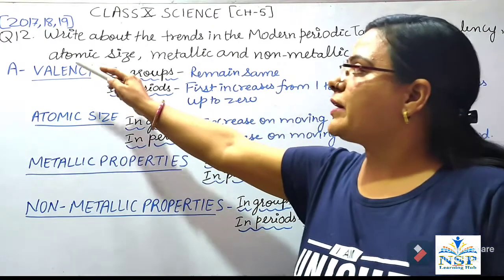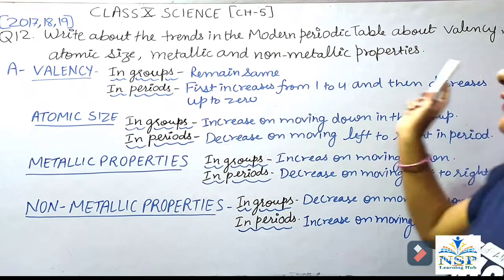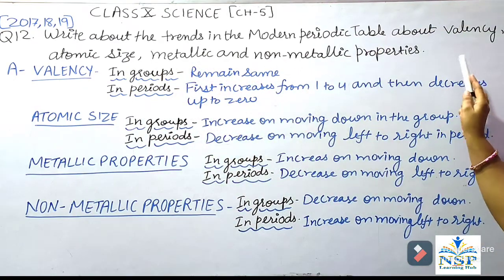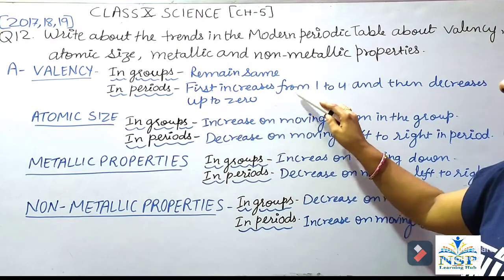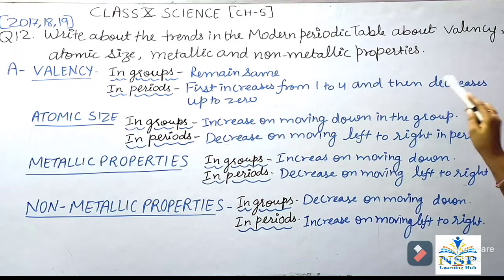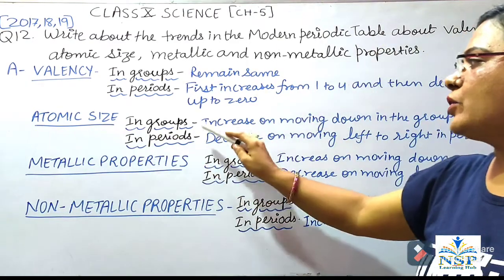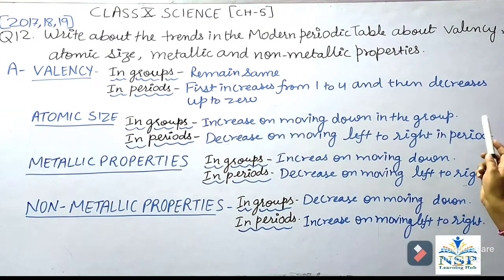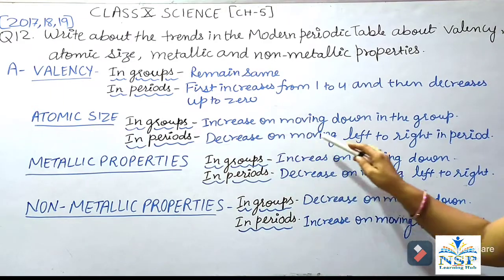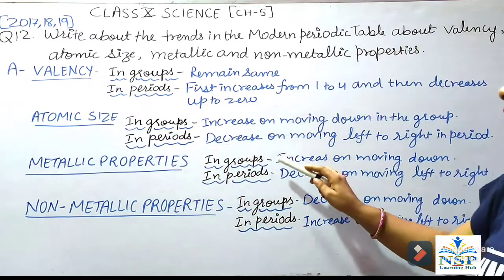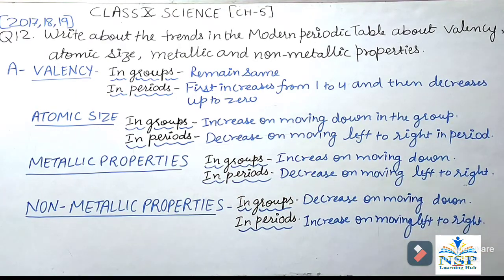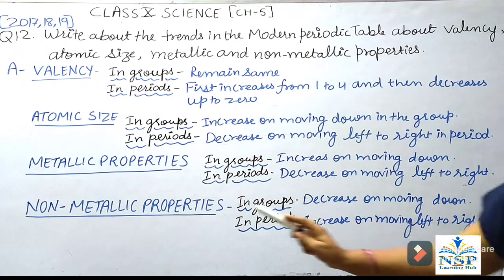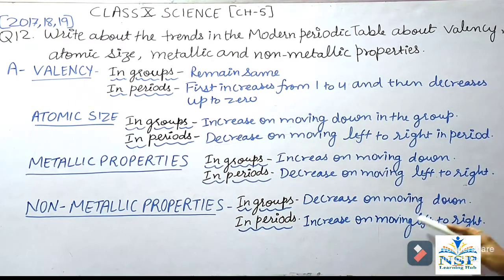Write about the trends in the Modern Periodic Table about valency, atomic size, metallic and non-metallic properties. Valency: in groups, valency remains the same; in periods, valency first increases from 1 to 4, then decreases up to 0. Atomic size: in groups, atomic size increases on moving down; in periods, atomic size decreases on moving left to right. Metallic properties: in groups, metallic property increases on moving down; in periods, metallic property decreases on moving left to right. Non-metallic properties: in groups, non-metallic properties decrease on moving down; in periods, non-metallic properties increase on moving left to right.